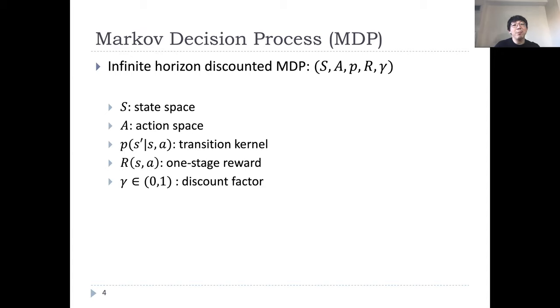Let us start with some background. We will consider infinite horizon discounted MDP, which can be described by these five components. S and A are the state space and action space, respectively. P is the transition kernel, which determines the probability of transitioning to S' given the current state S and an action A. R(s,a) is the reward we receive by playing action A.